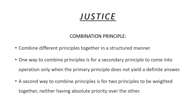So when you cannot take a single decision, we need to apply a combination principle. The combination principle combines different principles together in a structured manner. One way to combine principles is for a secondary principle to come into operation when the primary principle does not yield a definite answer. For example, if two patients have similar need for treatment and both are terminally ill, then we see which of the two will benefit more from the treatment — based on that second principle, we combine the first and second to decide who gets the treatment. A second way of combining principles is for two principles to be weighted together, neither having absolute priority over the other.